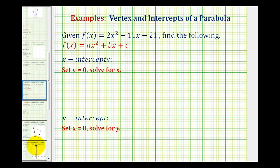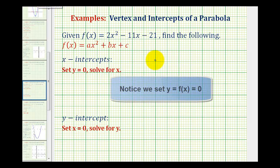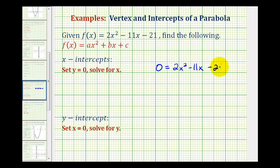Let's start by finding the x-intercepts. So we'll set y equal to zero and solve for x. Remember, y values are function values, so to find the x-intercepts, we actually want to solve the equation zero equals 2x squared minus 11x minus 21.